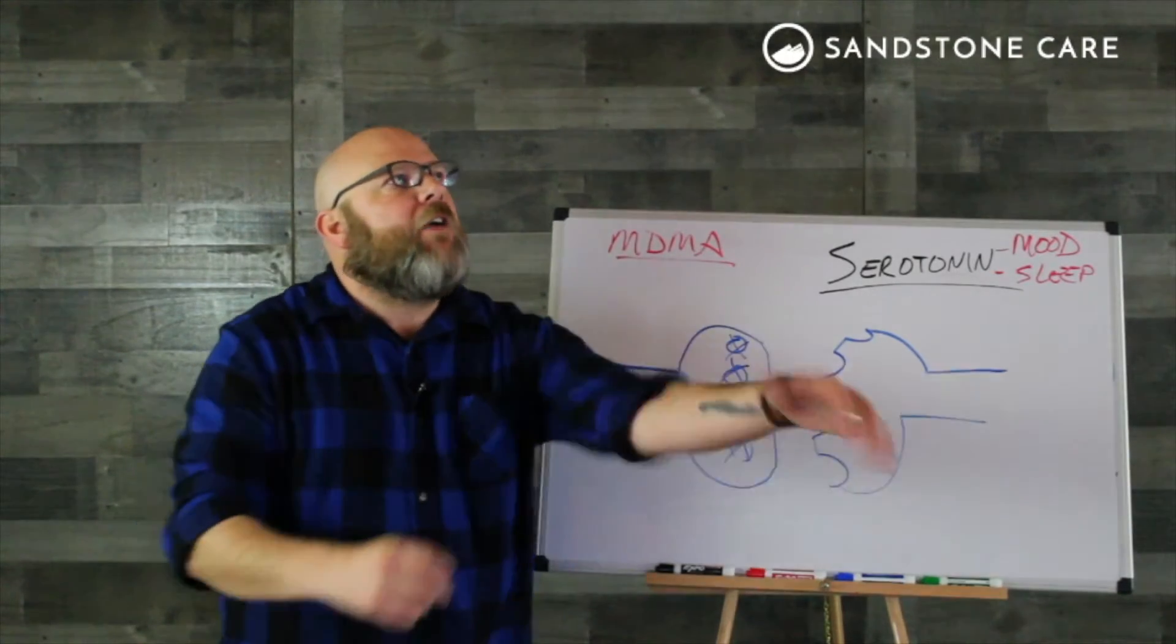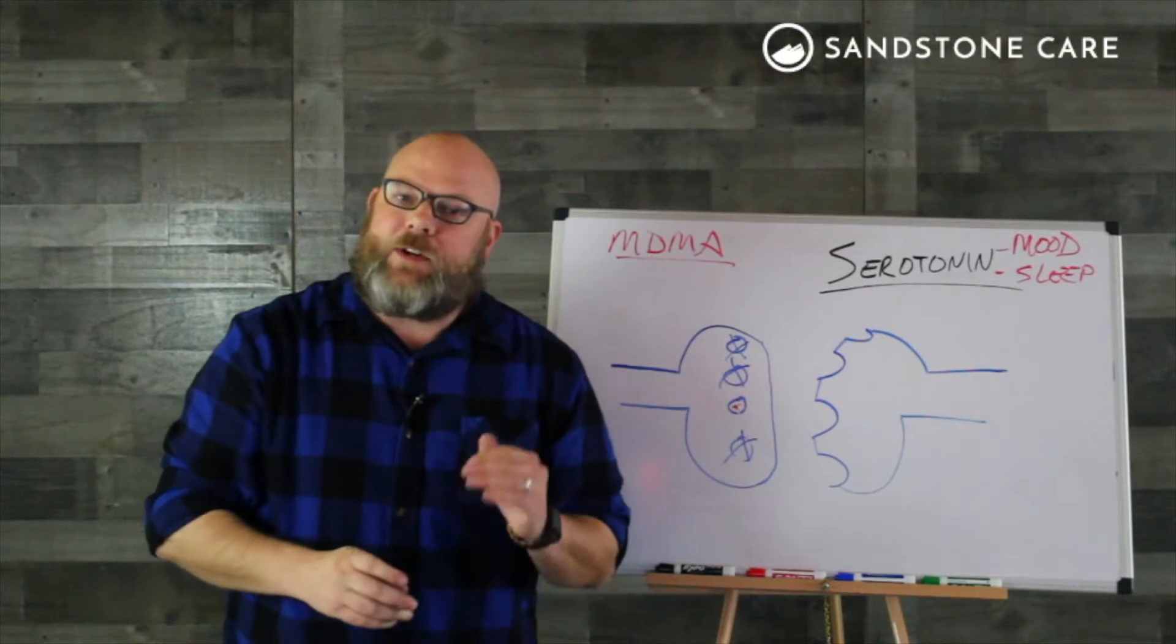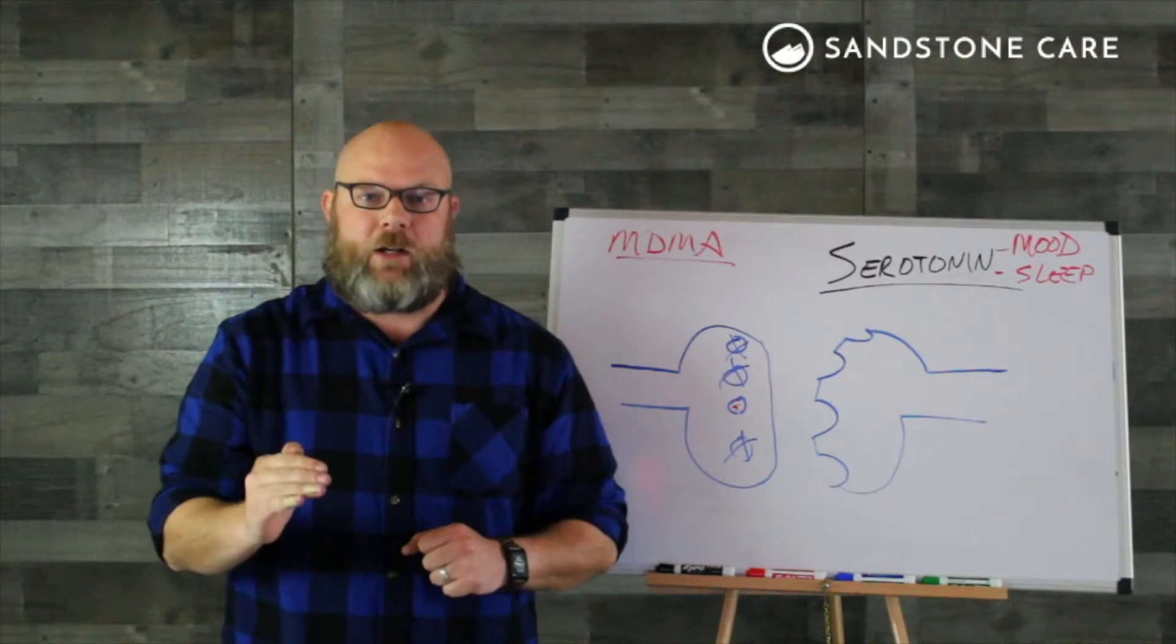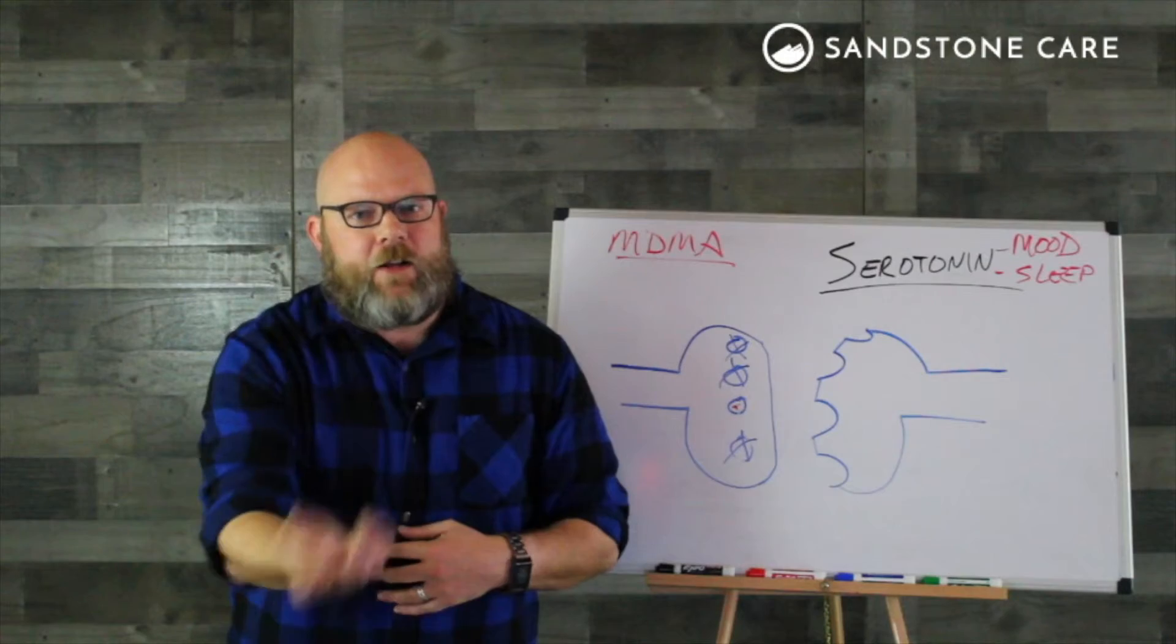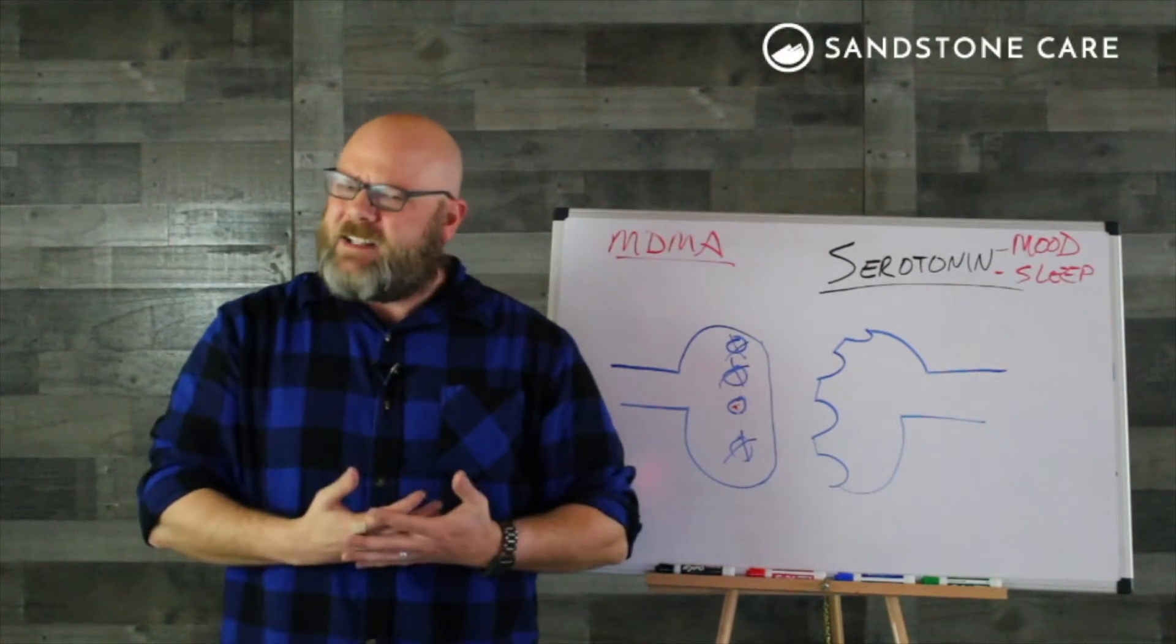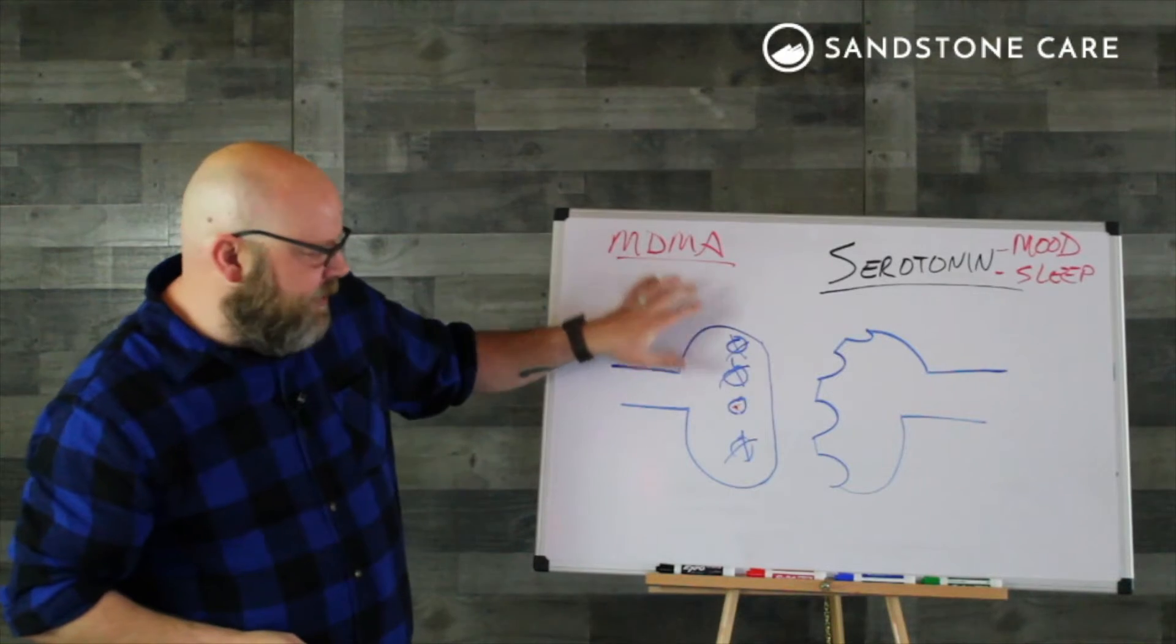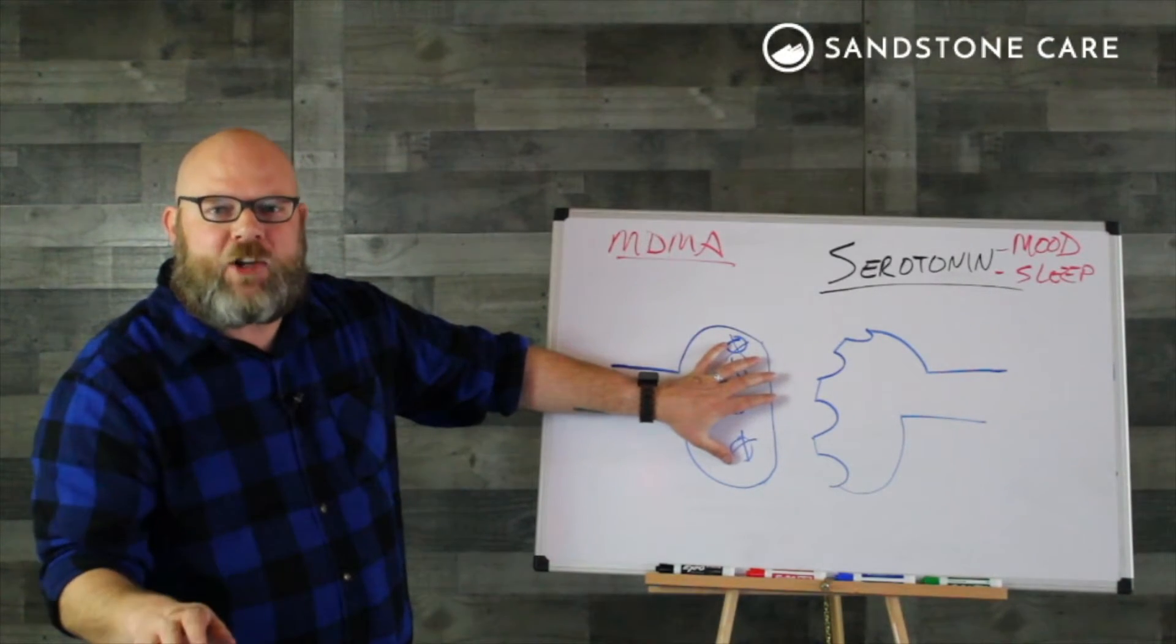If we take a snapshot of a person during ecstasy withdrawal, there's a chance that that person could checkbox enough of the diagnostic criteria for depression to be diagnosed as having depression, and to be given depression treatments, and to be given depression medications. And it doesn't mean that that person's brain naturally has depression. It means that the symptoms of ecstasy withdrawal show up with the same symptoms as depression.